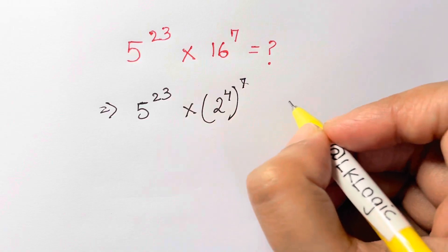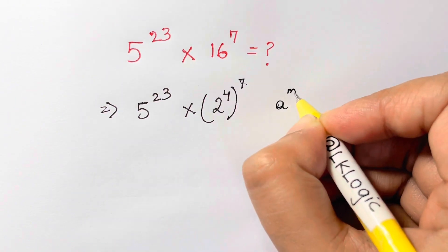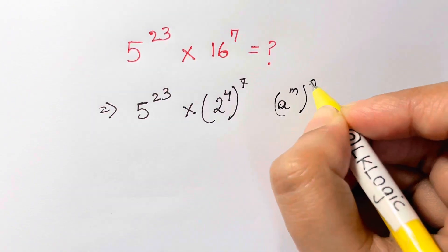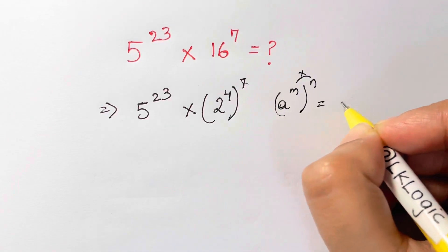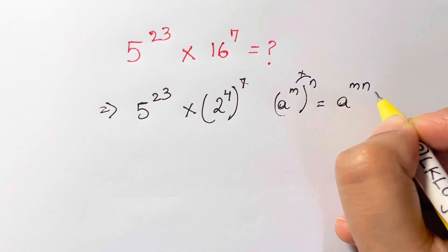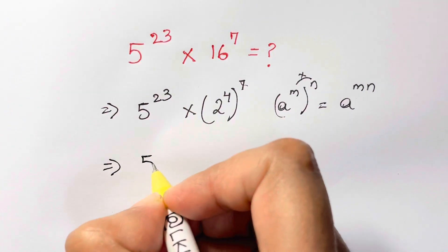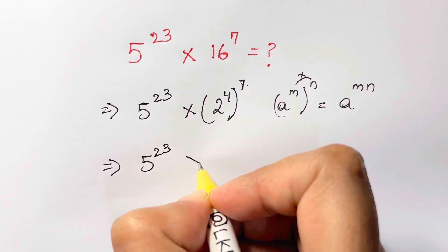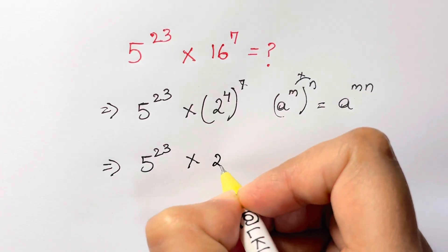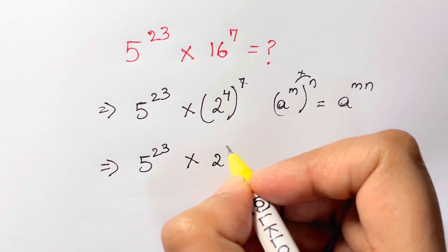Whenever you have something like this, a to the power of m whole to the power of n, you just multiply the powers: a to the power of m times n. Now you have 5 to the 23 times 2 to the power of 4 times 7, which is 28.